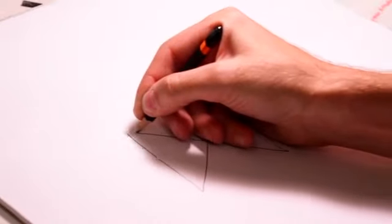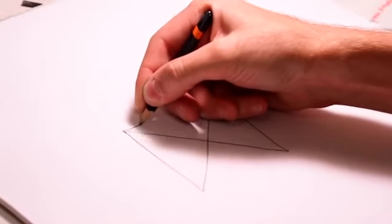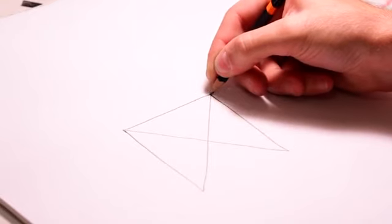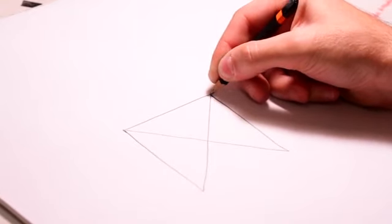Diagonal line up to meet at the top left corner, horizontal line across to meet at this corner, then a slight diagonal line down.